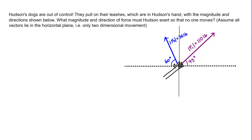Let's work through a word problem involving forces. Here's a scenario: Hudson's dogs are out of control. They pull on their leashes, which are in Hudson's hand, with the magnitude and direction shown below. What magnitude and direction of force must Hudson exert so that no one moves? We're going to assume all vectors lie in the horizontal plane — in other words, we're only dealing with two-dimensional movement.